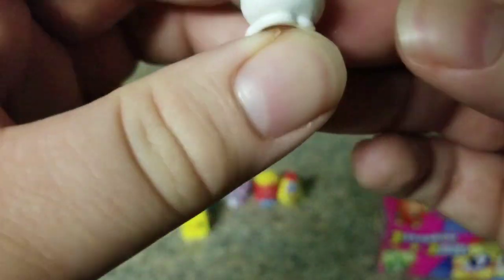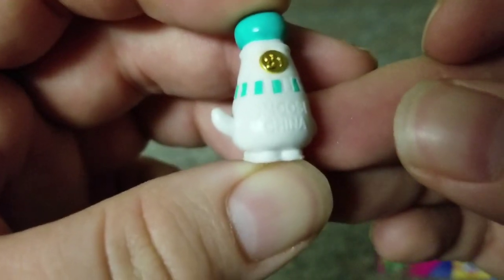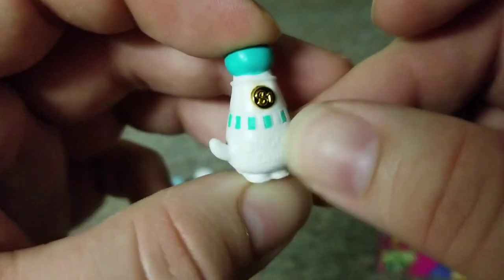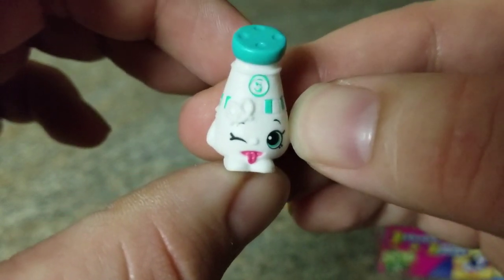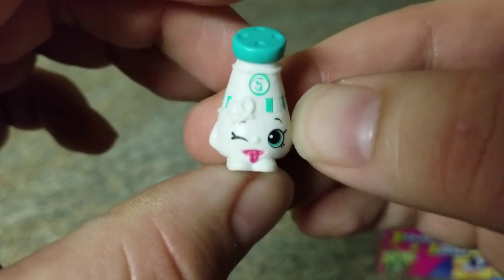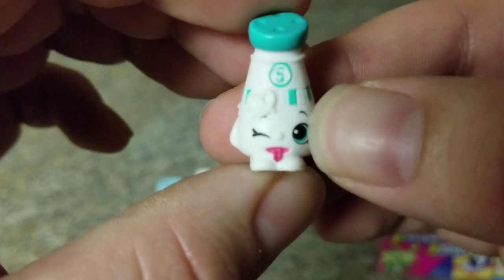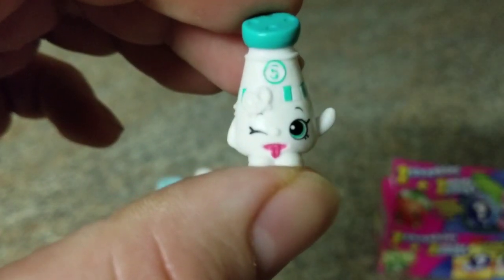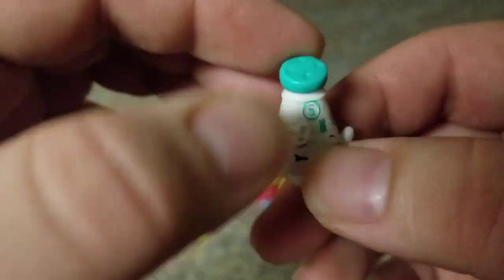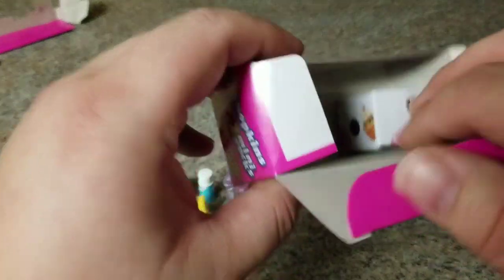Alright, we got... it looks like a... sorry about that, season one it is... a salt shaker! Salt shaker, yeah, it's got S on it. Yeah, that's salt shaker. And man, does she or he look goofy! Look at that, geez, what a goofball. Alright, what else we got here?